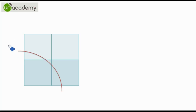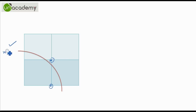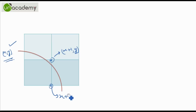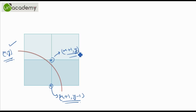We have this situation right here in which we have to select between this pixel and this pixel — which one to be plotted. We have previously plotted a point (x, y), and the next candidates are (x+1, y) and (x+1, y-1). These are the two selections from which we have to pick one to be plotted.